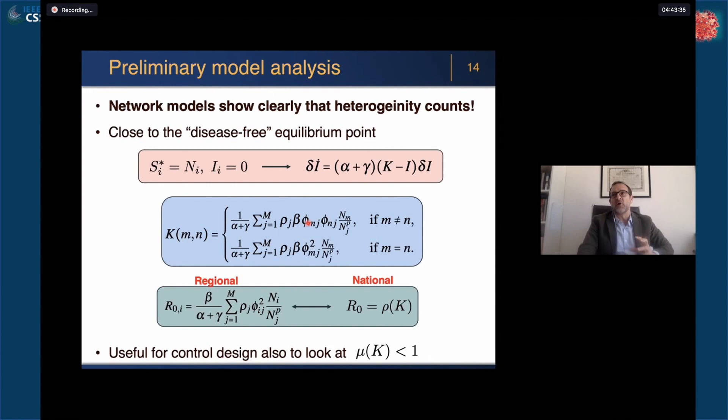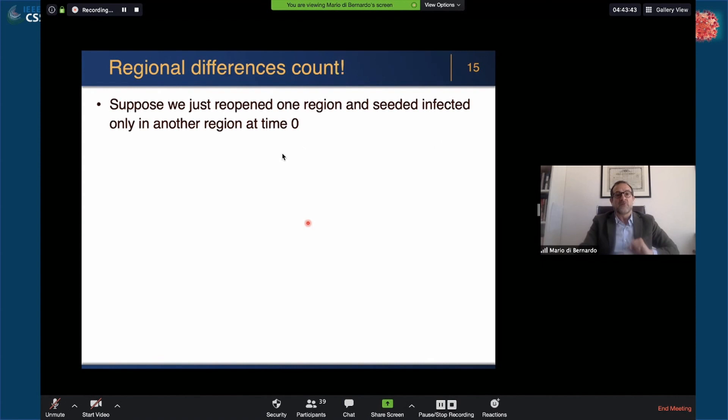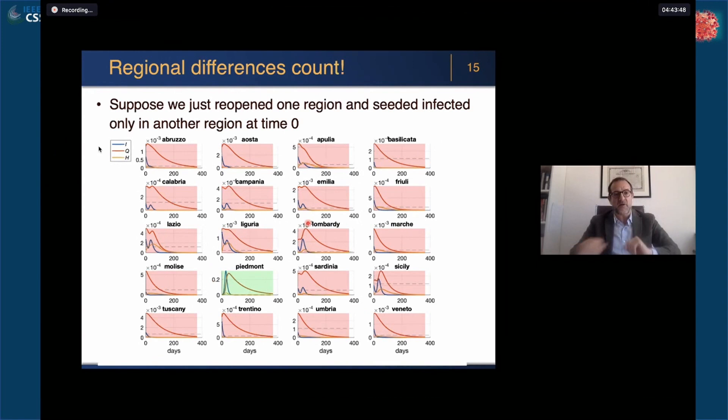Let's go into some of the model predictions. First, regional differences count, and they count very much. Look at this scenario: we set the parameters on the 22nd of March, and we just imagine that one region, I chose this in honor of our organizer, reopens completely at time zero, relaxes completely just that region's restrictions. What we see is that this primary infection in one region causes secondary infections in other regions, even away from it, look at Sicily down here, and also we see some element of a recurrent peak in some of our simulations.